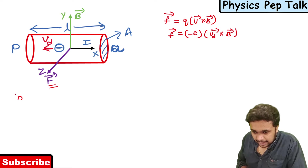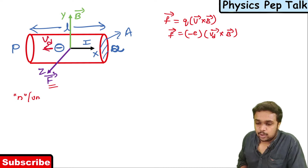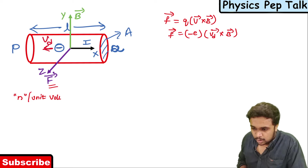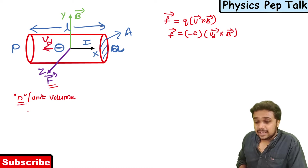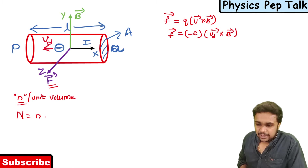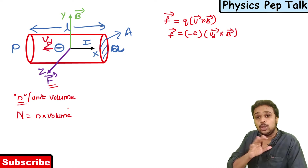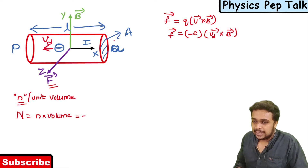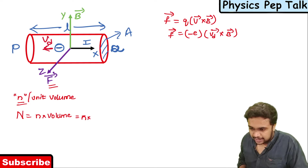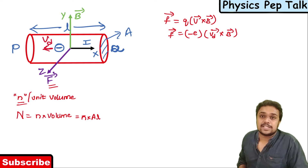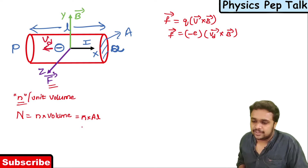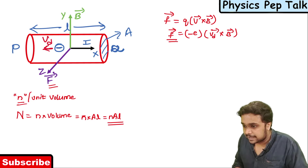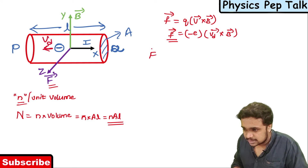Let n be the number of electrons per unit volume present in this conductor. The total number of electrons, capital N, is the number of electrons per unit volume multiplied by the volume of the conductor. The volume is the cross-sectional area A times the length L, so total N equals n times A times L.